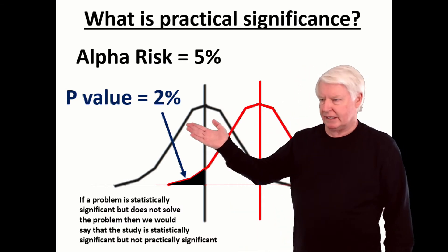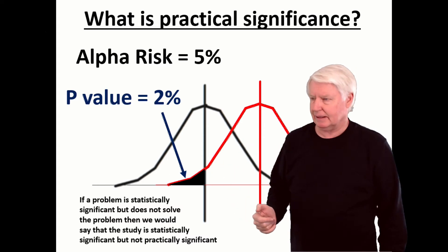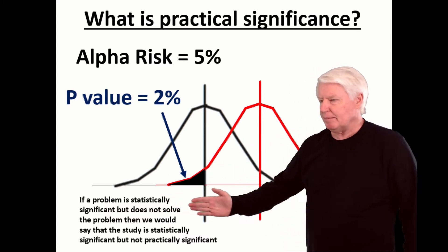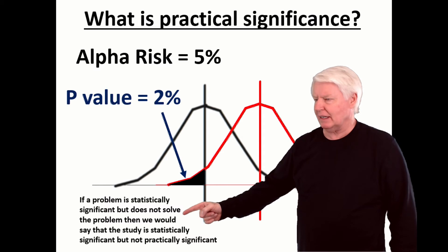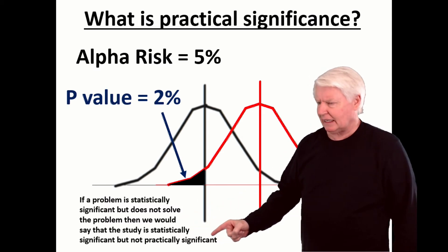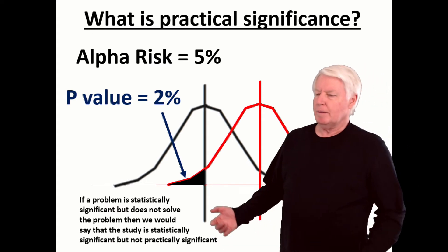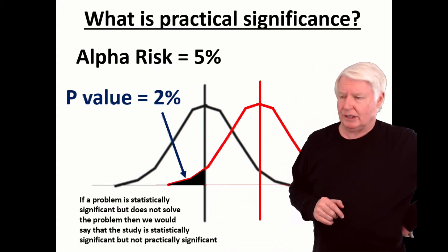So in this case, it would be statistically significant, but not practically significant. So let me read that. If a problem is statistically significant, but does not solve the problem, then we would say that the study is statistically significant, but not practically significant. And so, a very important distinction there.